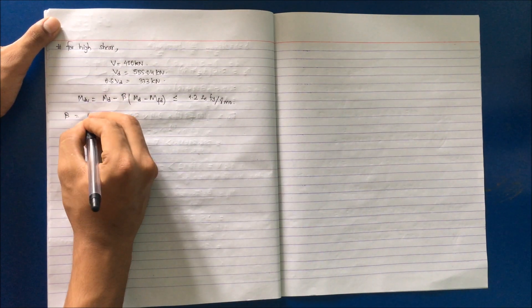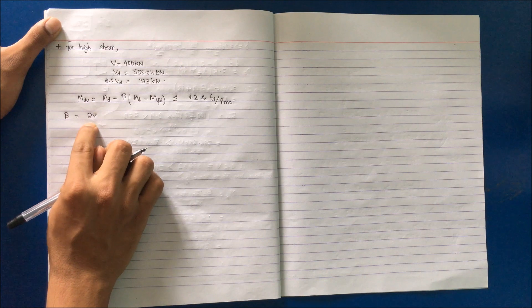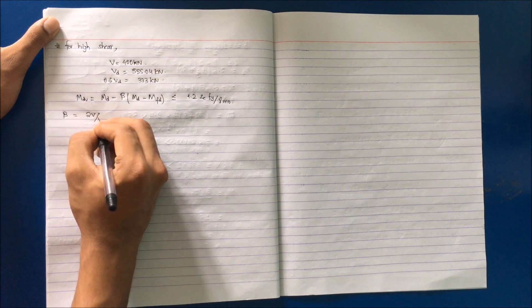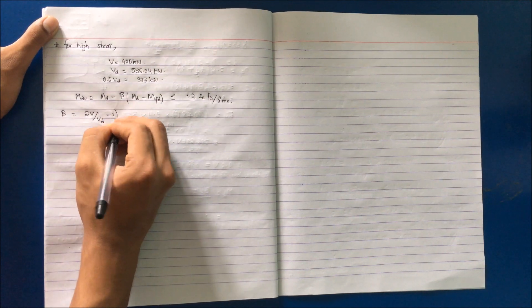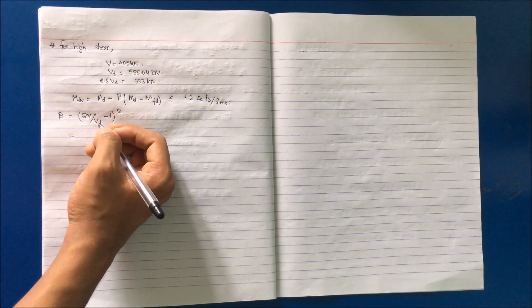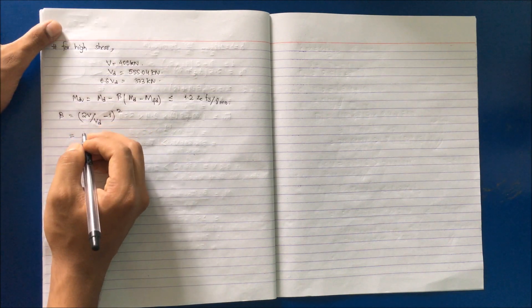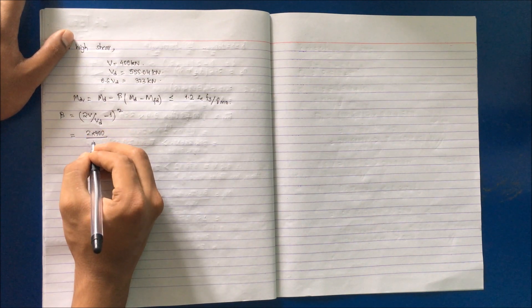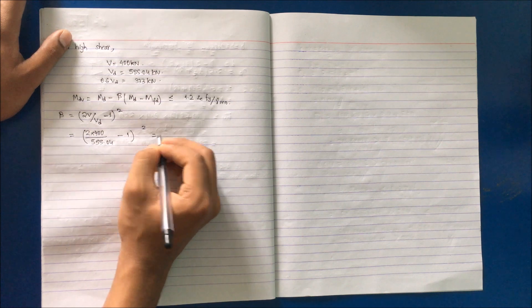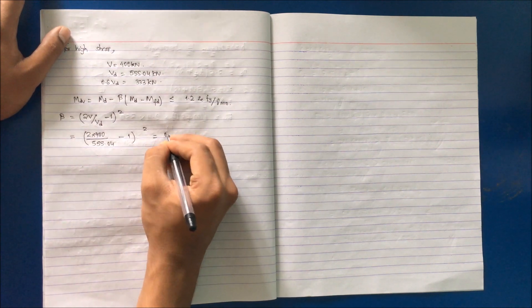Beta is equal to (2 times the maximum shear force acting on this section divided by design shear strength minus 1) squared. Substitute the value of V and Vd. So 2 into 400 divided by Vd, that is 555.04, minus 1, squared. We get the value as 0.194.